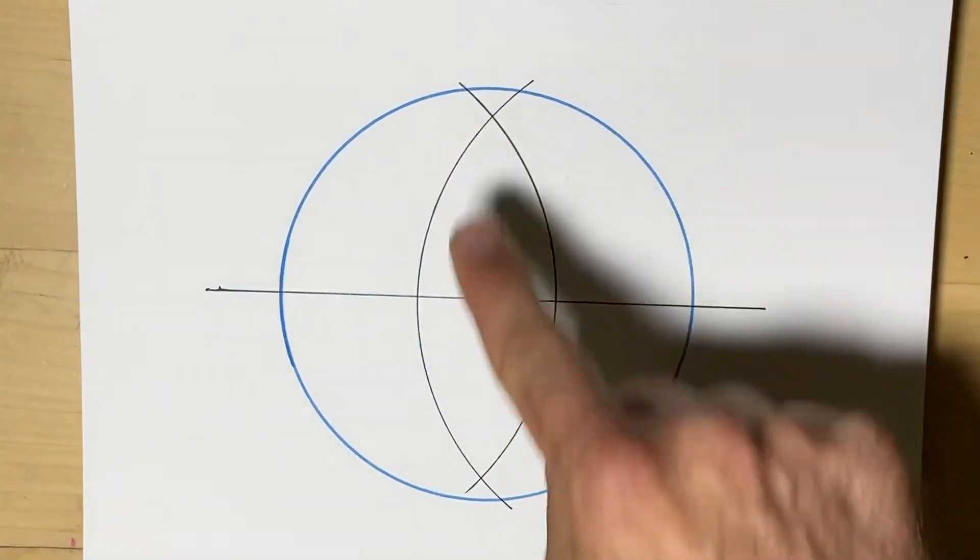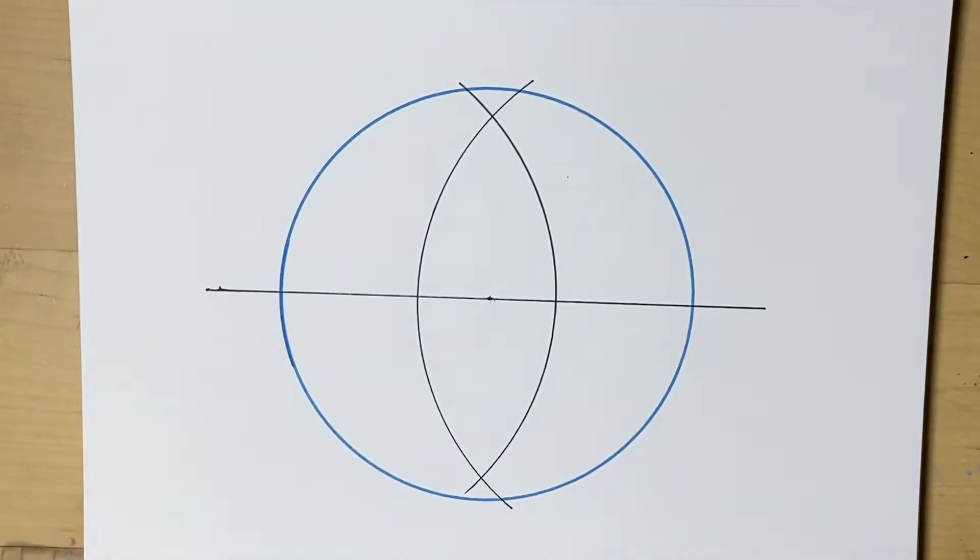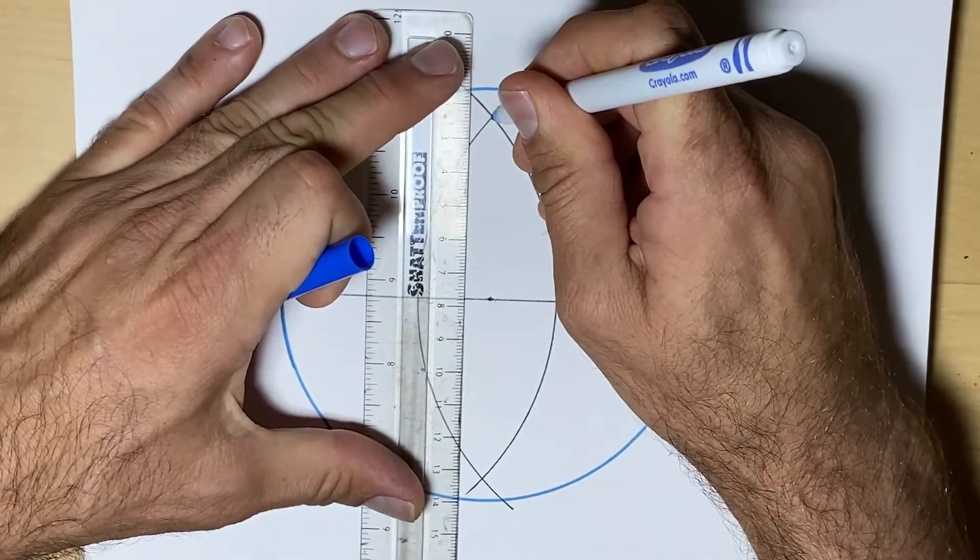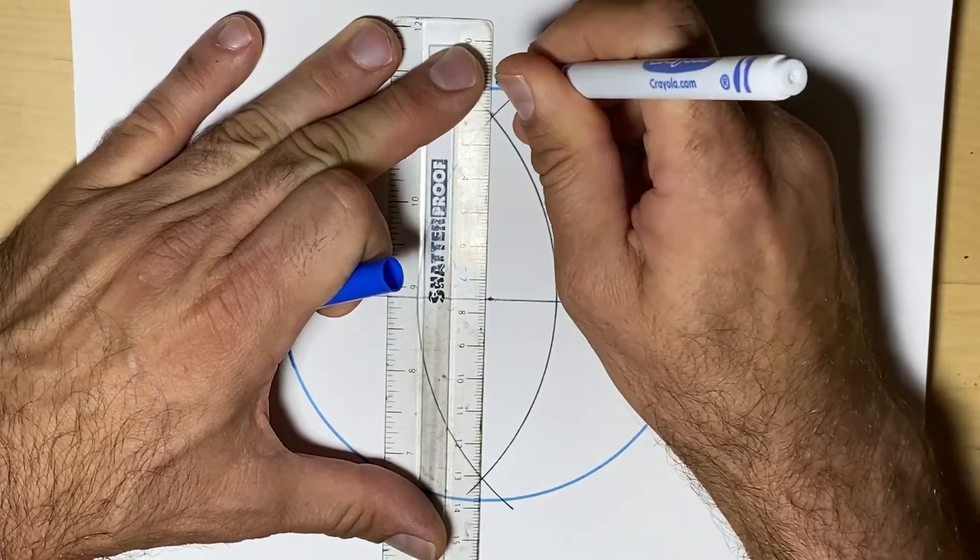So these two spots where the arcs meet or intersect are going to be where we place our ruler. And that will cut the circle into quarters, into fourths.